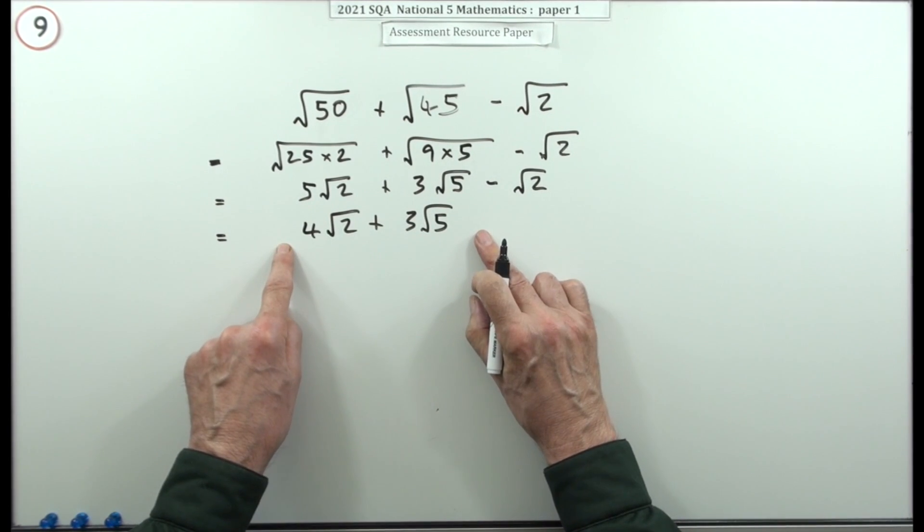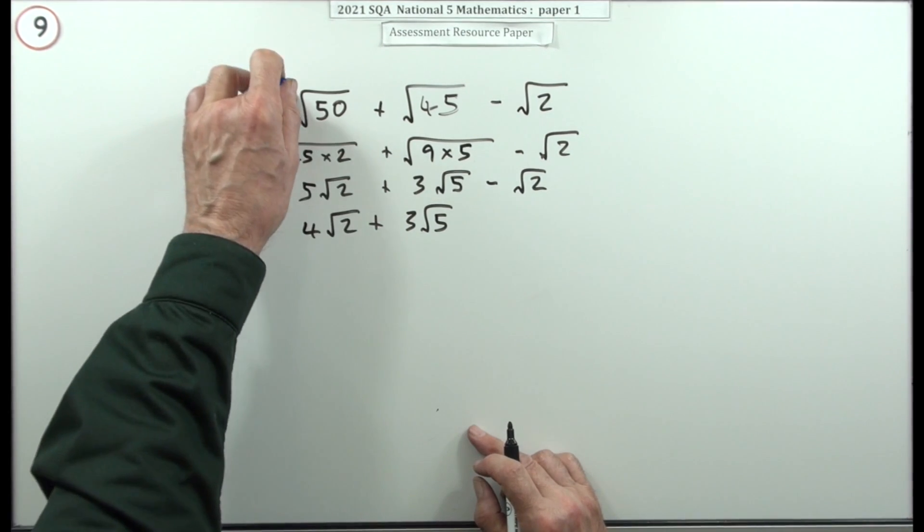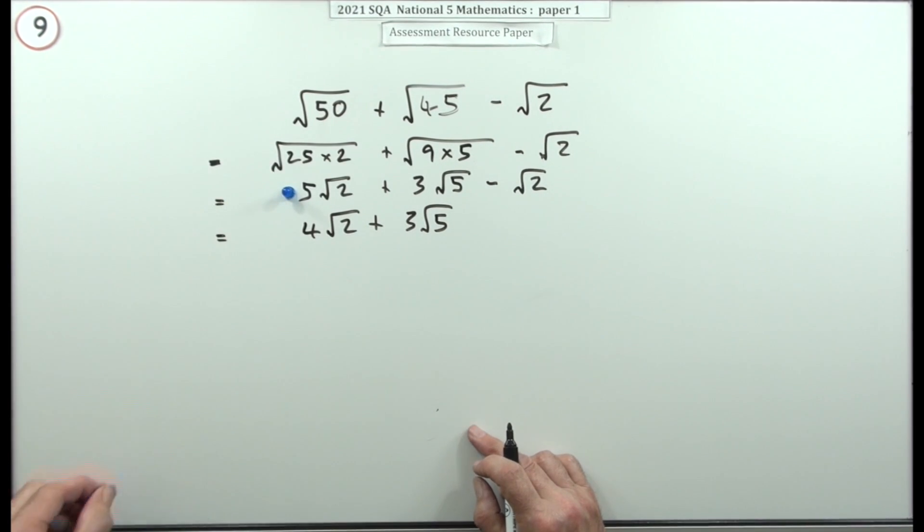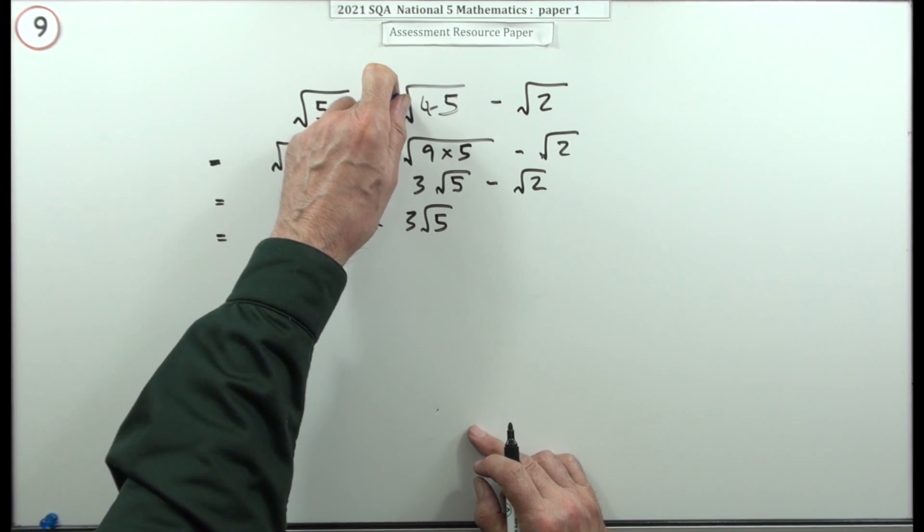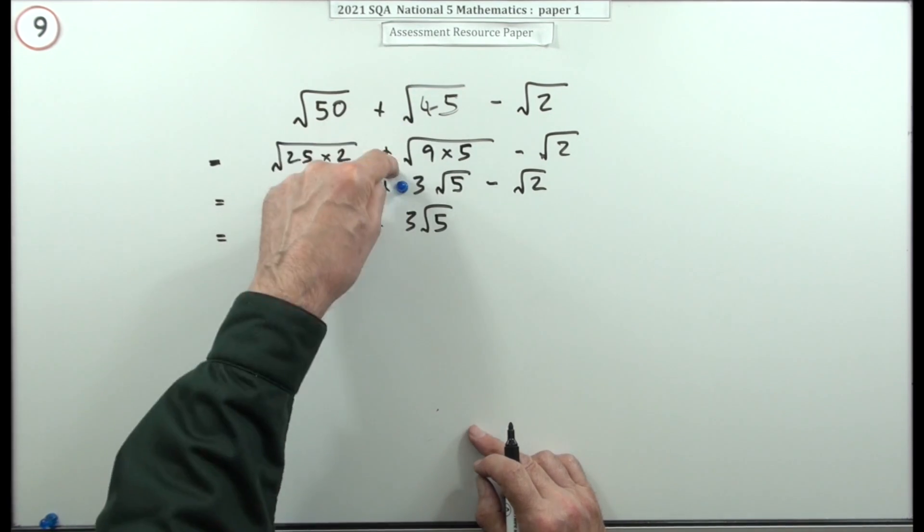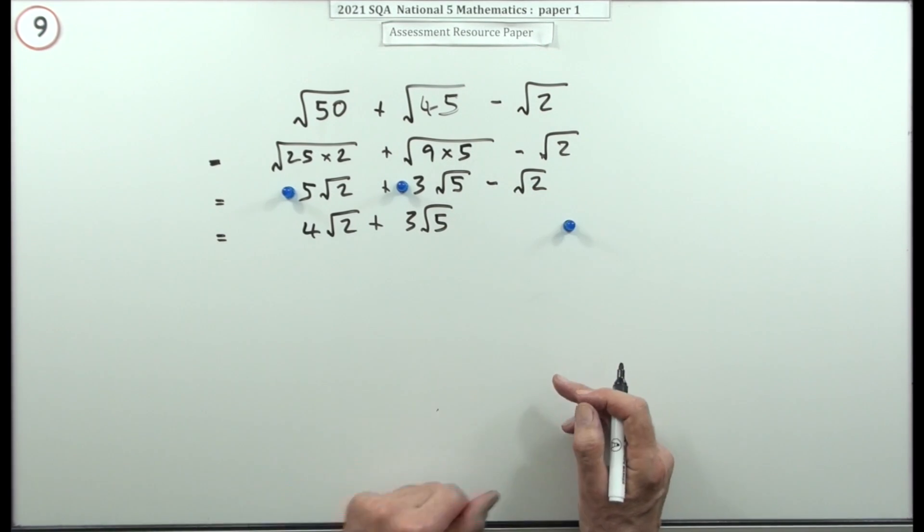Now the marks were: there was one mark for taking this one from root 50 to 5 root 2, which you could have written straight away. There was one mark for taking root 45 and going to 3 root 5 by extracting that root 9, which you could have done straight away of course. There wasn't anything there because all you're doing is copying it. And then the final one is for cutting it up by combining these two terms.